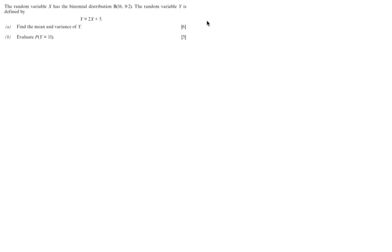The random variable X has the binomial distribution B(n=16, p=0.2). The random variable Y is defined by Y = 2X + 5. We want to find the mean and variance of Y and to evaluate the probability that Y is equal to 11.